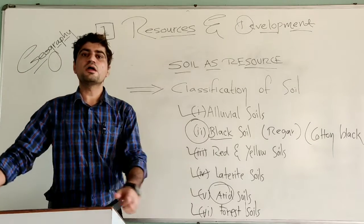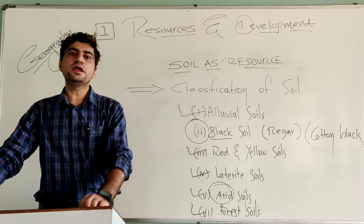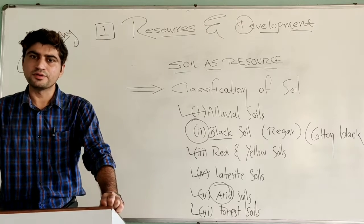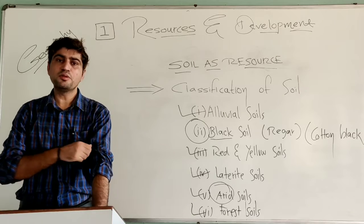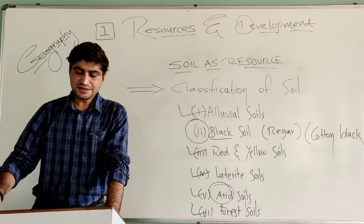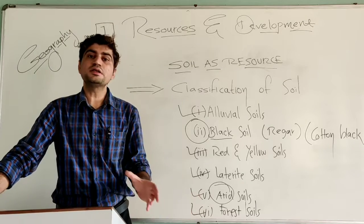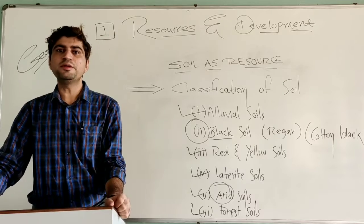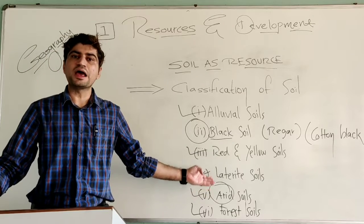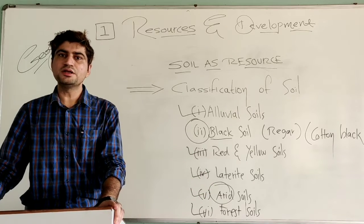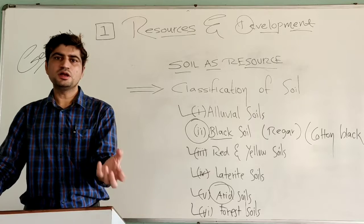The next type of soil is arid soil. Arid means dry. Arid soil is found in areas with higher temperature and low rainfall, like some parts of Gujarat and Rajasthan. The color of arid soil ranges from red to brown. They are generally sandy in texture and saline in nature. In some areas, this soil contains a high amount of salt, and common salt can be obtained by evaporating water from the soil. Due to dry climatic conditions, water evaporates easily, so less vegetation is found due to less rainfall.